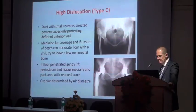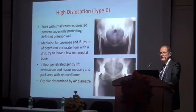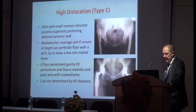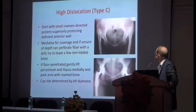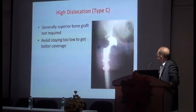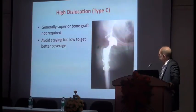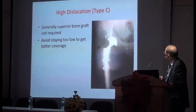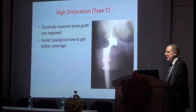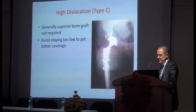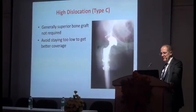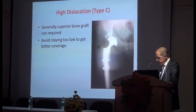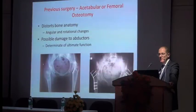The cup size is determined by the AP size of the acetabulum once you've located it. Generally, superior bone graft is not required. One trick is not to get too low — in one case the cup ended up below the obturator fossa and that patient had a slightly altered gait, a bit of circumduction, because they didn't have proper function of the hip musculature.